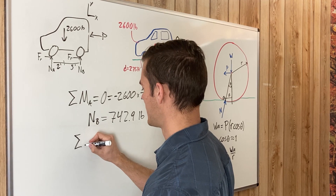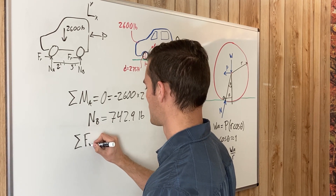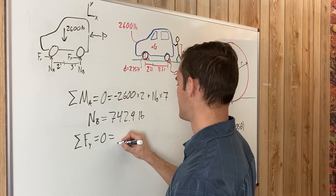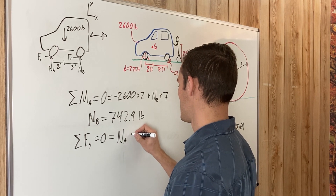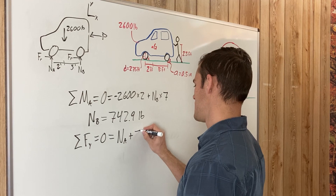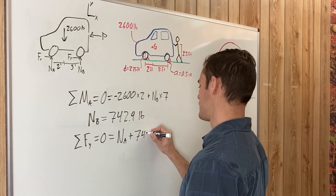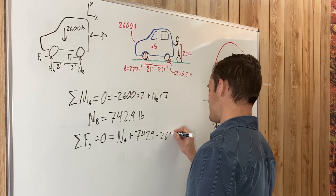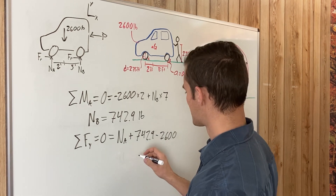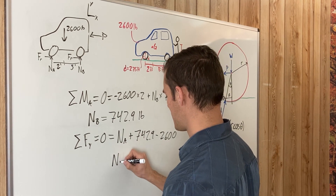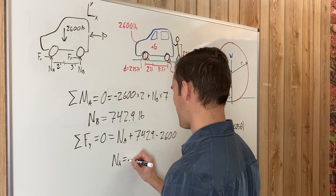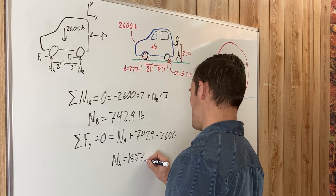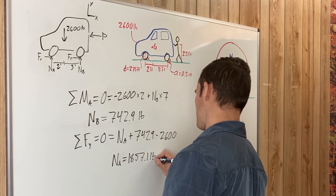Summing forces in the y direction: normal force at A plus normal force at B (742.9) minus 2,600 pounds equals zero. Solving, the normal force at A equals 1,857.1 pounds.